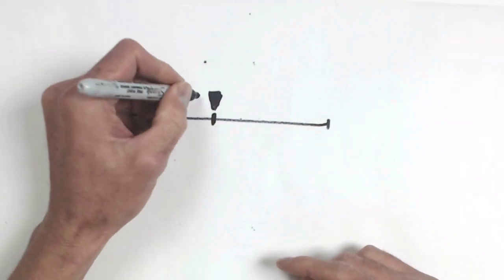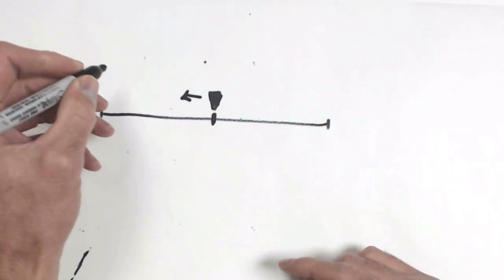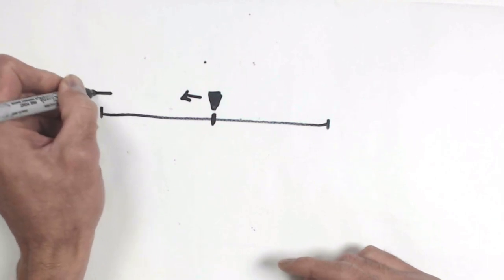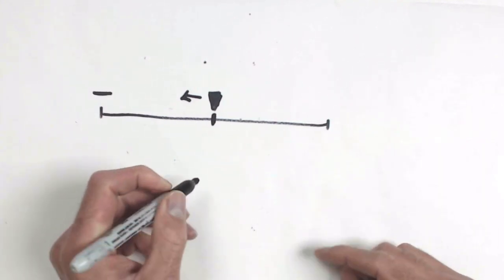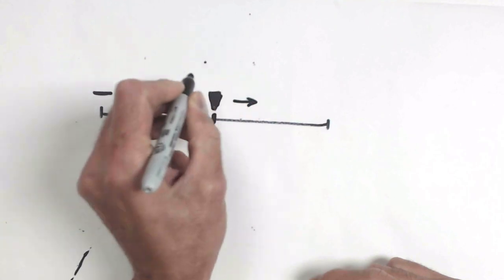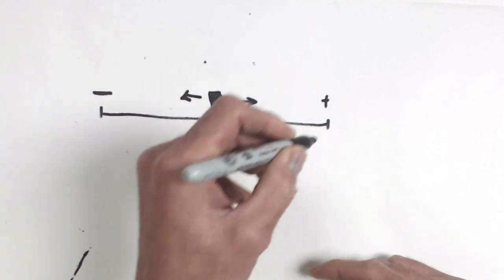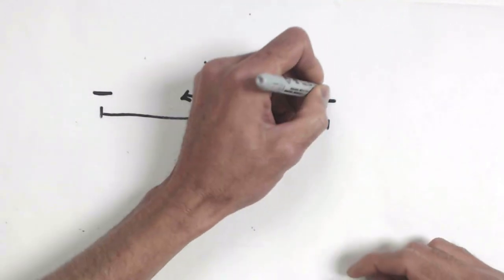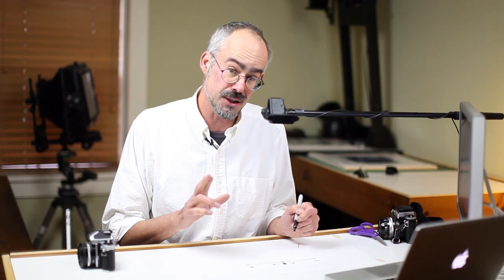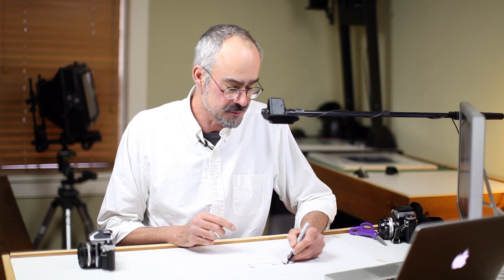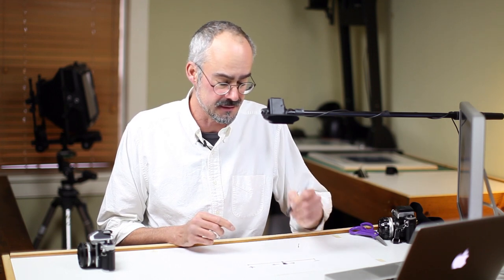If the pointer heads in this direction, that is normally underexposing. You'll have a minus sign. If the pointer heads in this direction, that's normally overexposing. So the first task in this exercise is to set an aperture and a shutter speed that situates the pointer in the center.